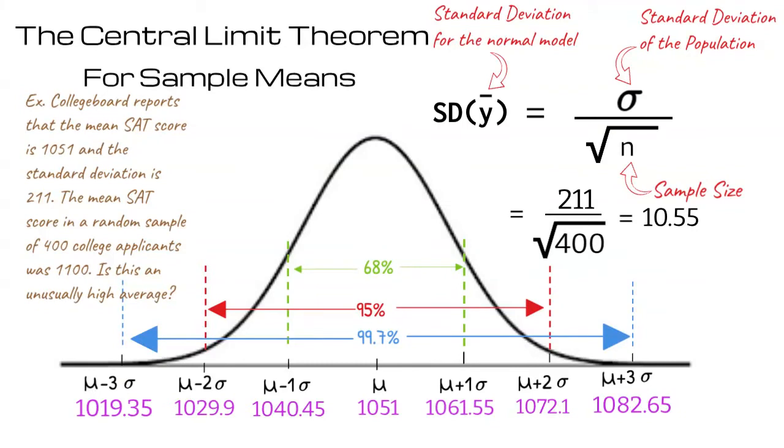Recall that the mean of our random sample is 1100. On our curve 1100 lies in this area. 1100 is more than three standard deviations above the mean. Since 99.7% of our sample means are within three standard deviations of the population mean, the sample mean of 1100 is unusually high.